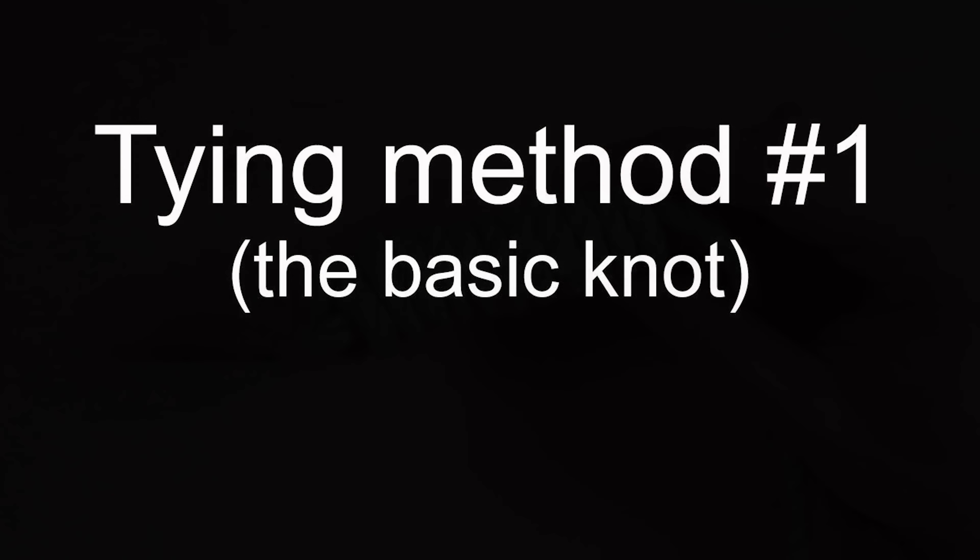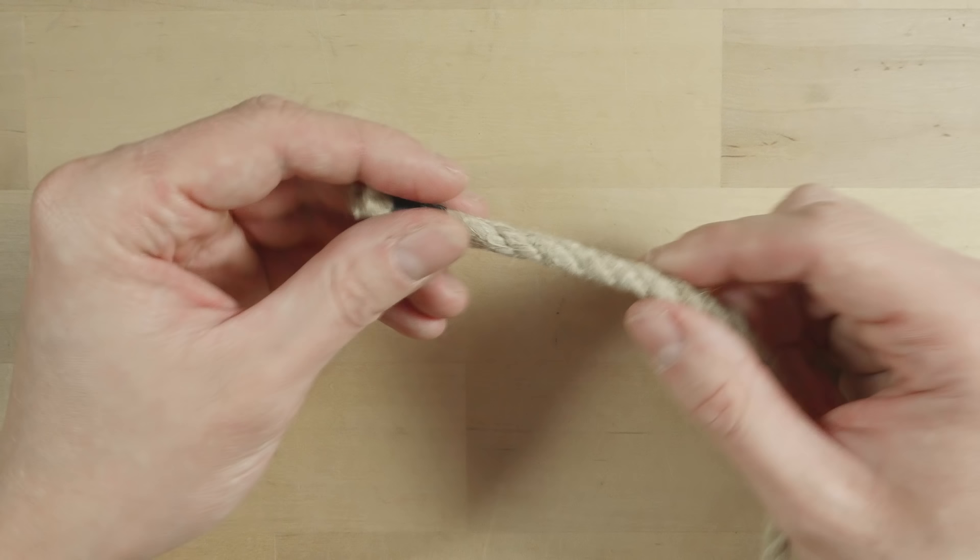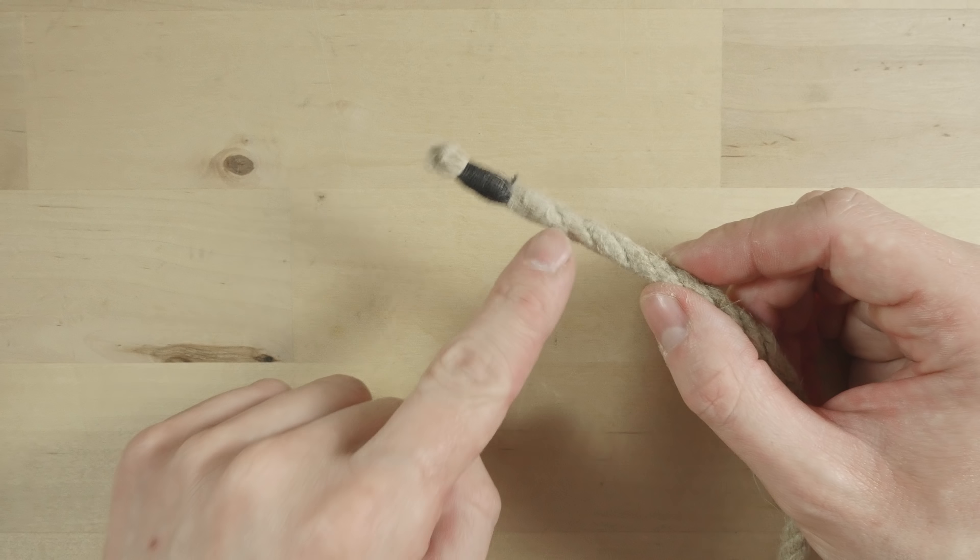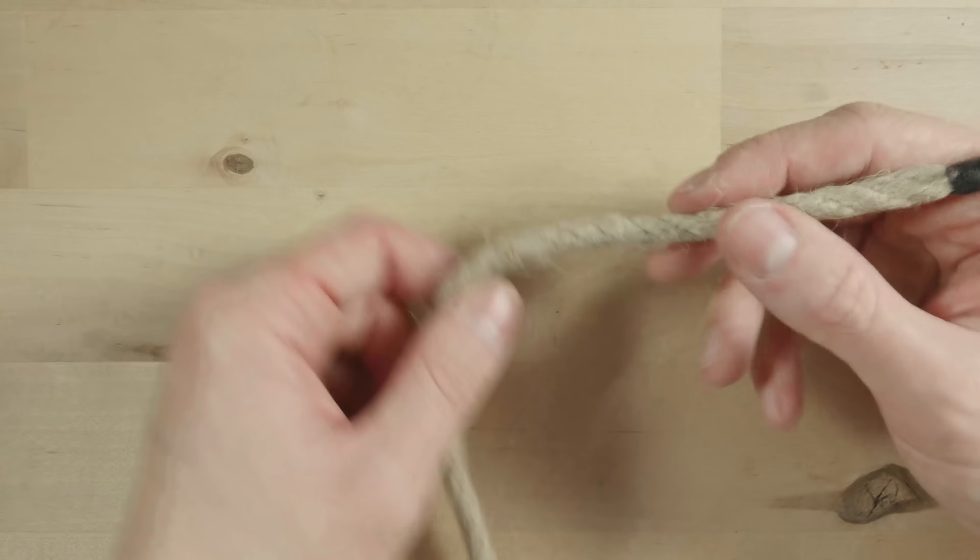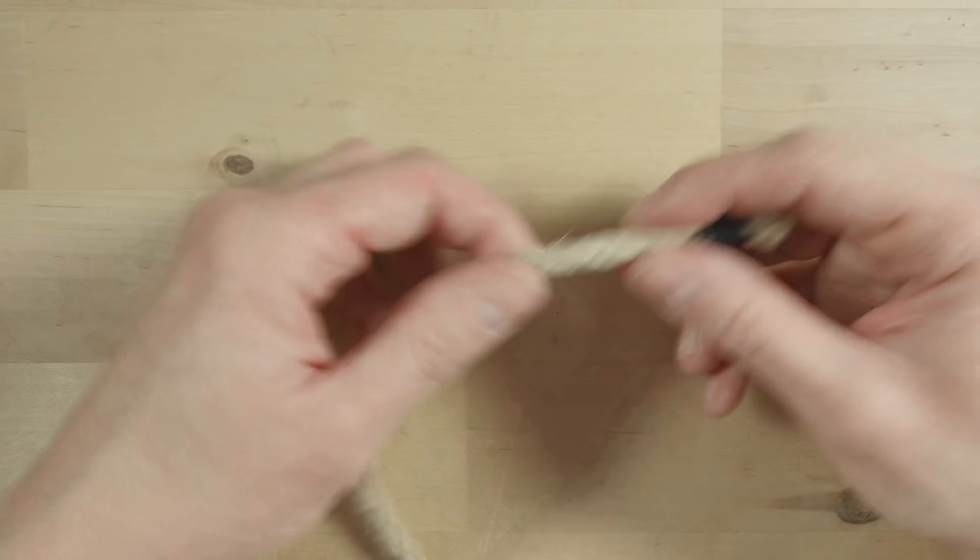The first way for tying the heaving line knot is probably the simplest one. So take an end of your rope and move a bit further into your rope. Then fold your rope into a bight. Take your working end and pass under the standing end.